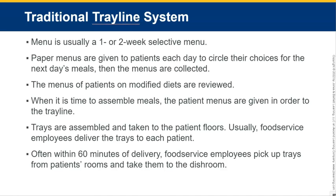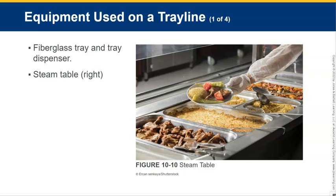The menus are collected, and menus of patients on modified diets are reviewed. When it is time to assemble meals, the patient menus are given in order to the tray line. Trays are assembled and taken to the patient floors — usually food service employees deliver the trays to each patient. Often within 60 minutes of delivery, food service employees pick up trays from patients' rooms and take them to the dish room.